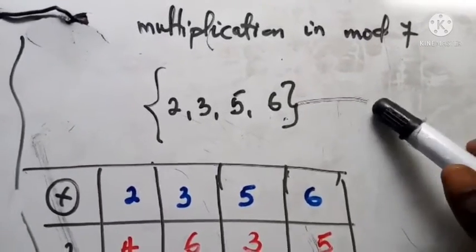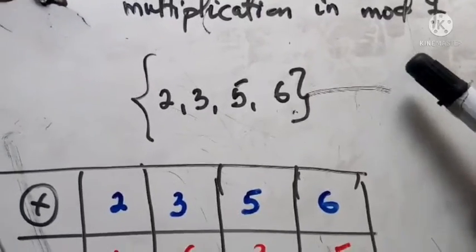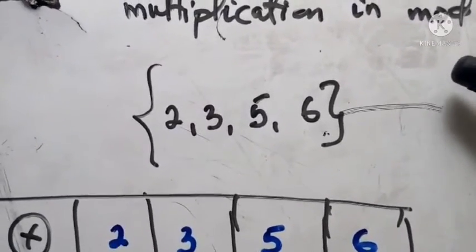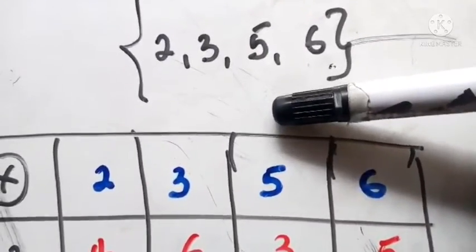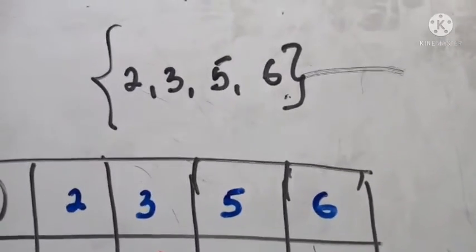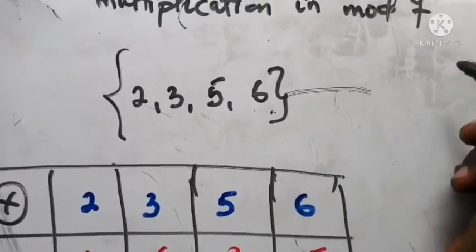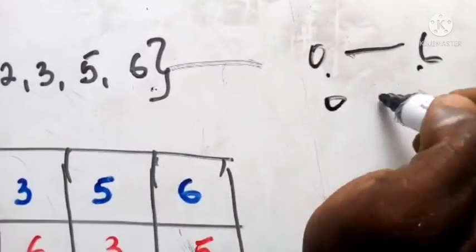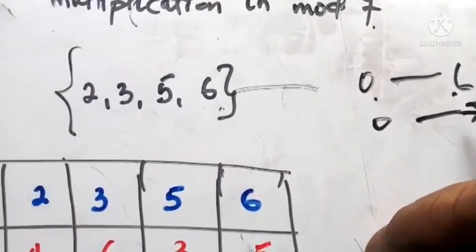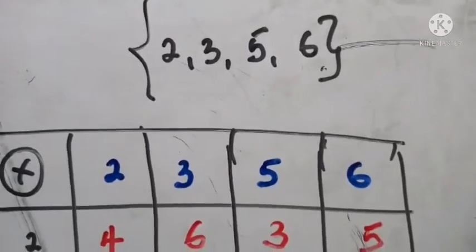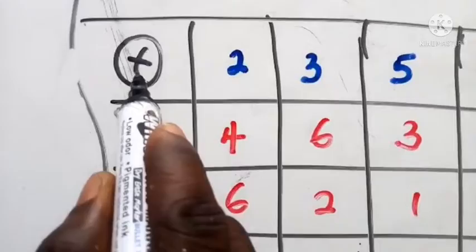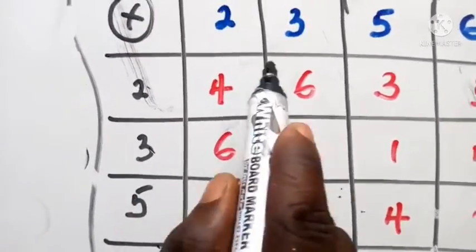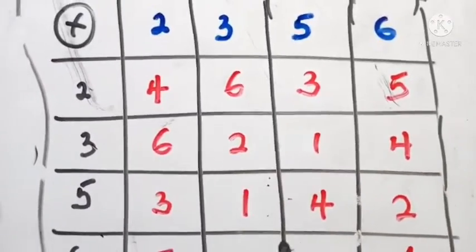The next question asks us to perform multiplication in mod 7. Unlike the previous question where the operation was defined for us, here we use ordinary multiplication. Our set is {2, 3, 5, 6}. In mod 7, numbers run from zero up to six. We build a multiplication table and fill in the gaps.